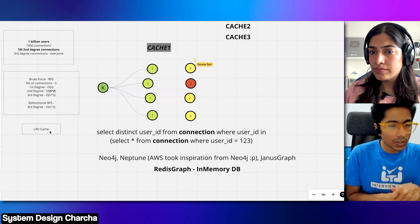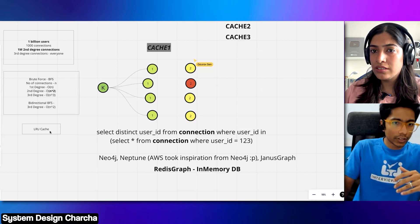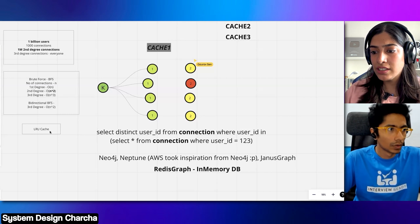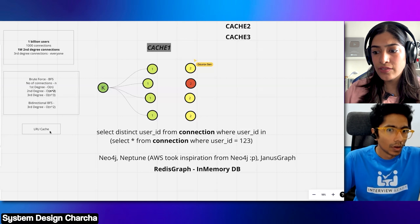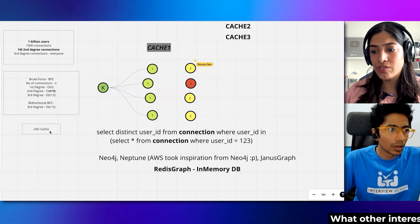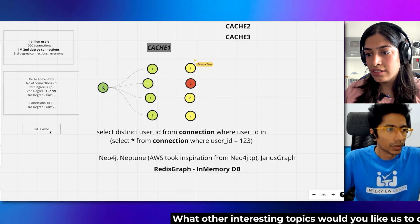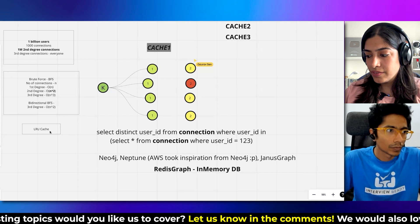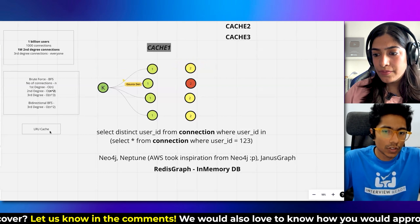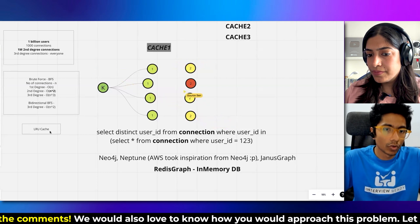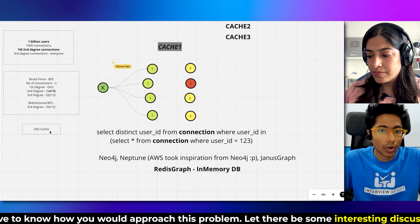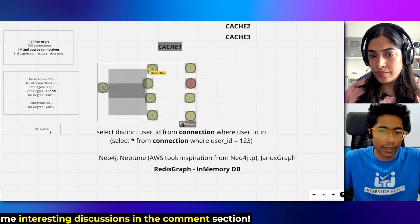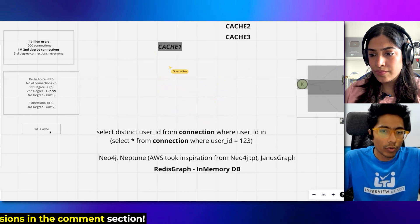For removals, maybe we want to do this with an eventual consistency approach — a background job that's constantly running. It is not a big deal if we see someone as a second or third degree connection even if they recently disconnected; it is fine if we eventually see that they are disconnected. First degree is a real problem, but second degree is fine. If a cache crashes, all this data has to be recomputed, which is expensive. So how do we do this efficiently?